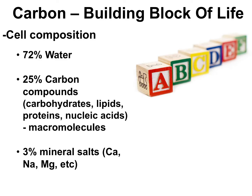You might have heard that life on Earth is carbon-based, and that's pretty much true. A cell is made up of about 72% water and 28% non-water chemicals. And of that 28% of non-water chemicals, nearly 90% of that is carbon-containing compounds. From our nutrient cycling, we know that carbon is found in the big four macromolecules: carbohydrates, lipids, proteins, and nucleic acids.